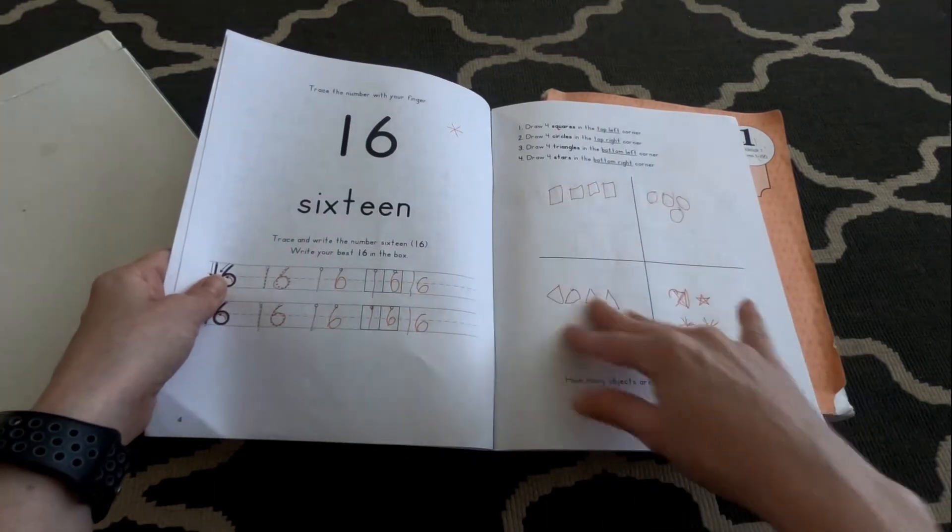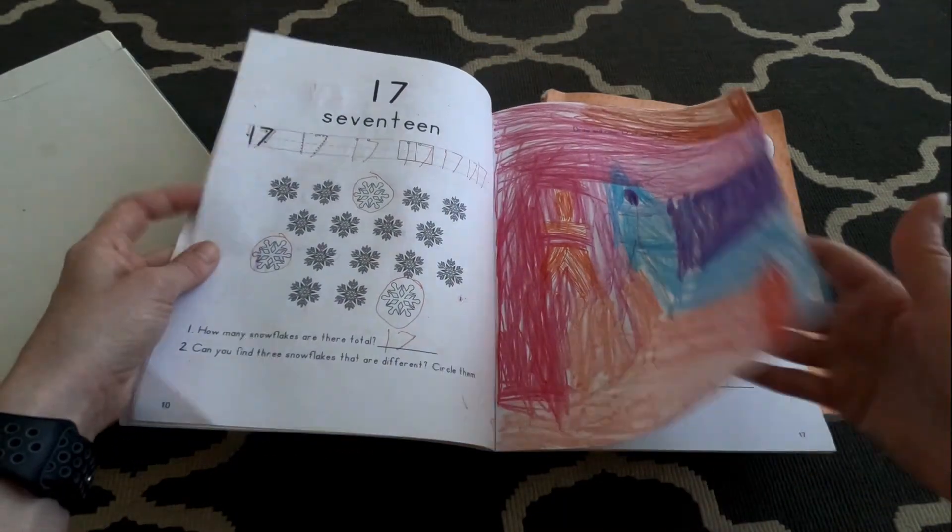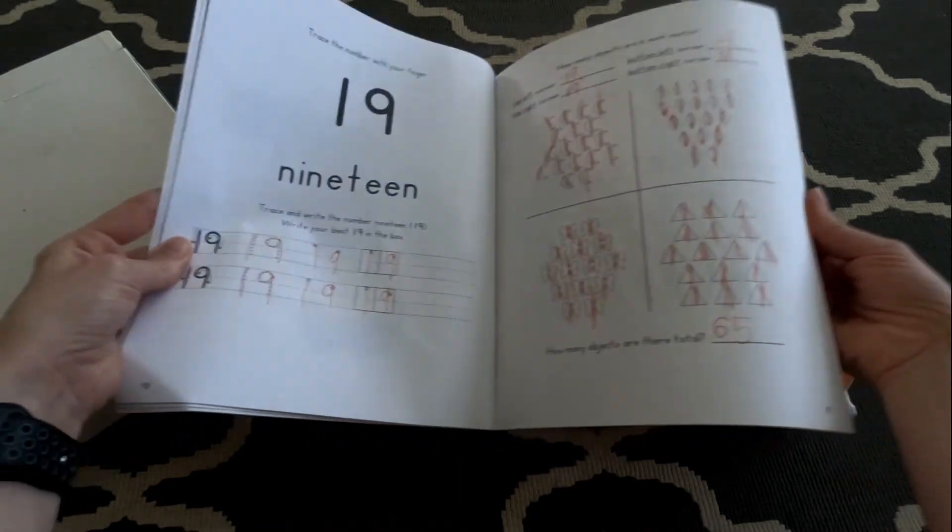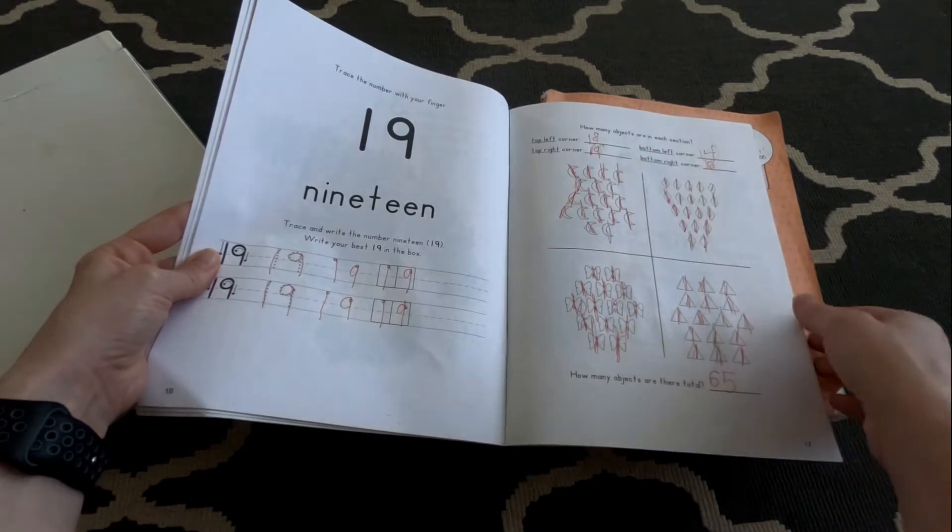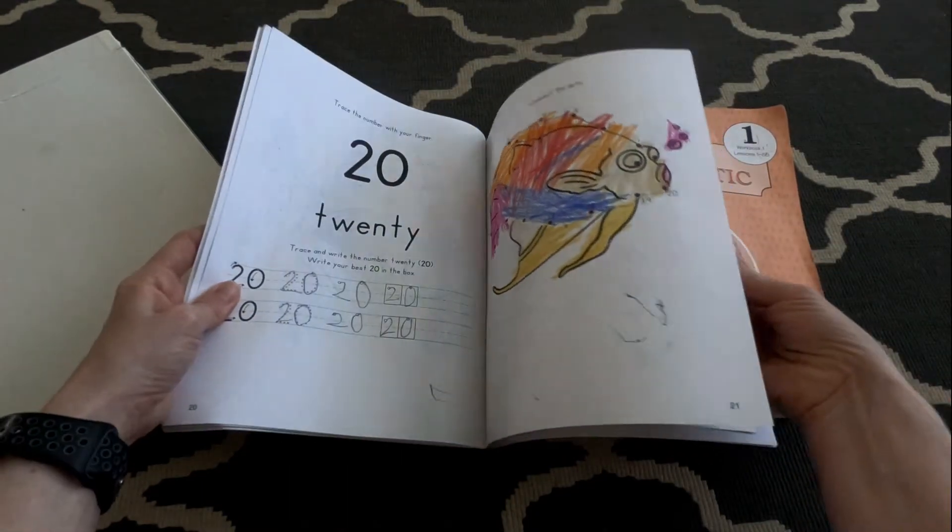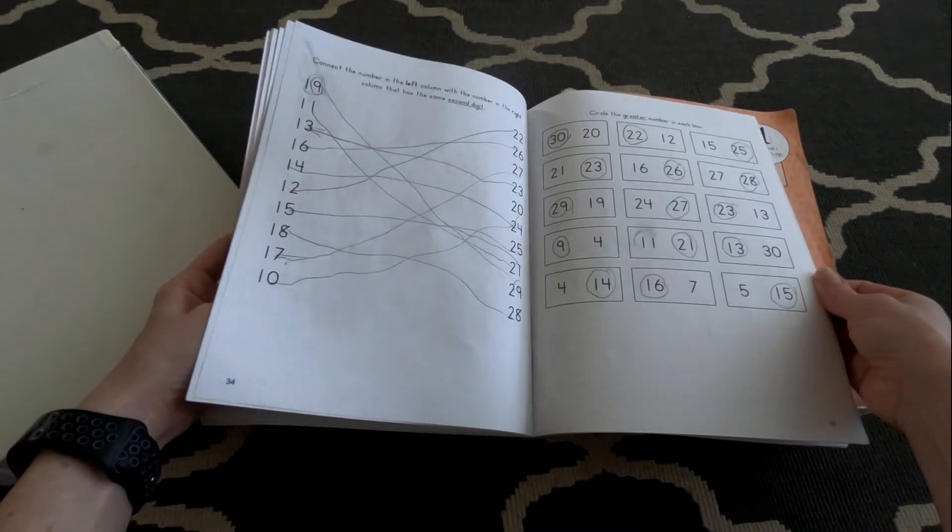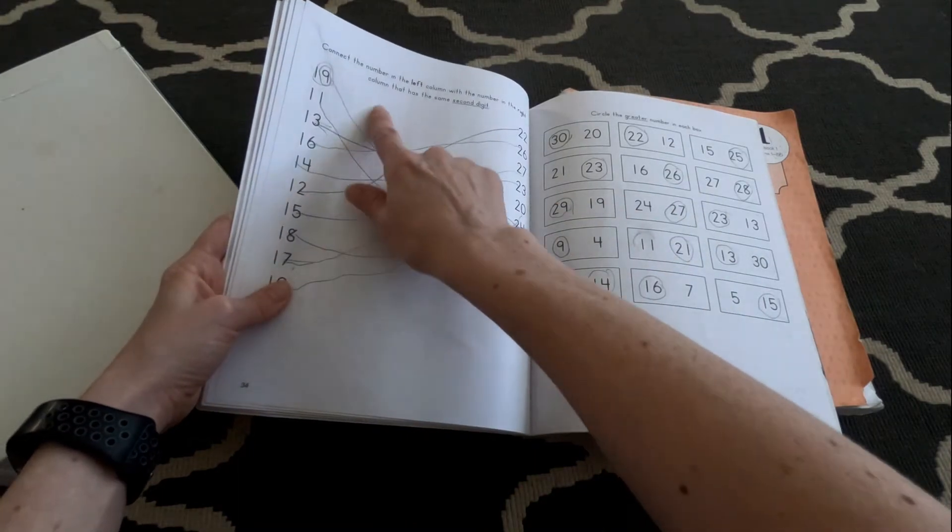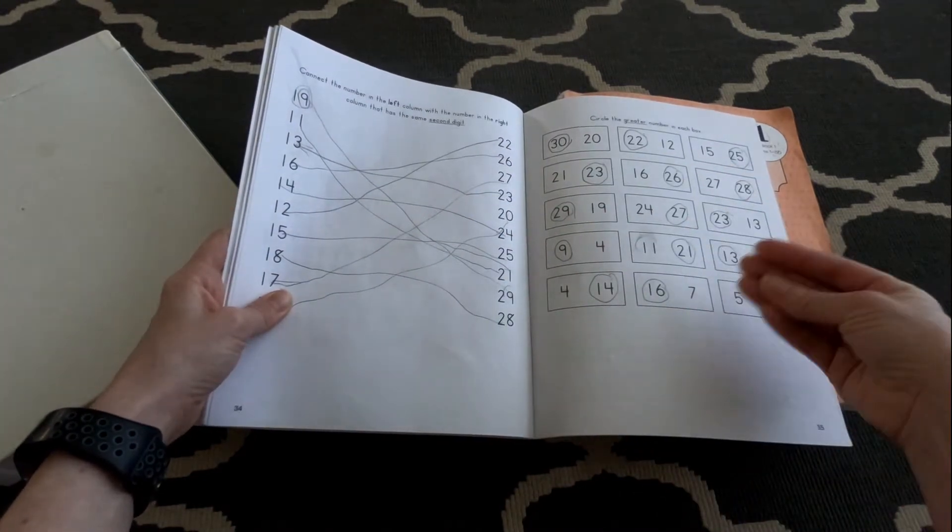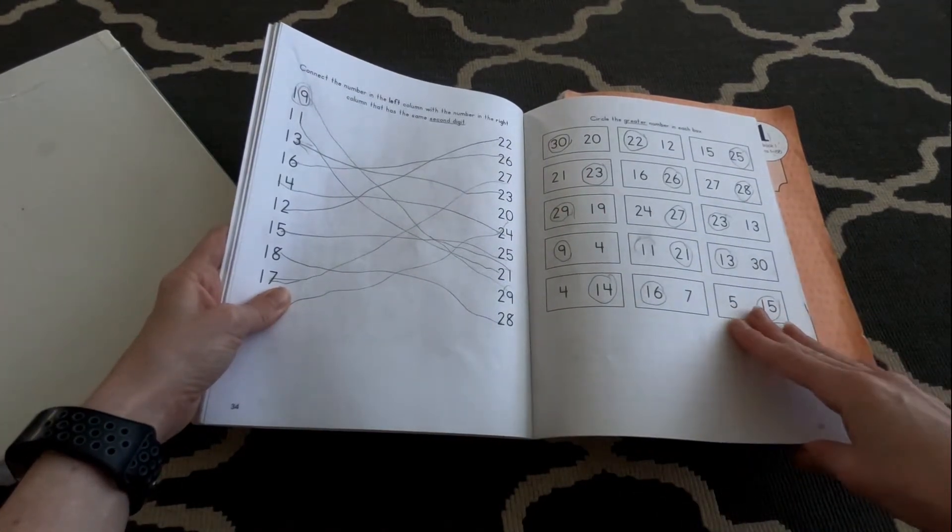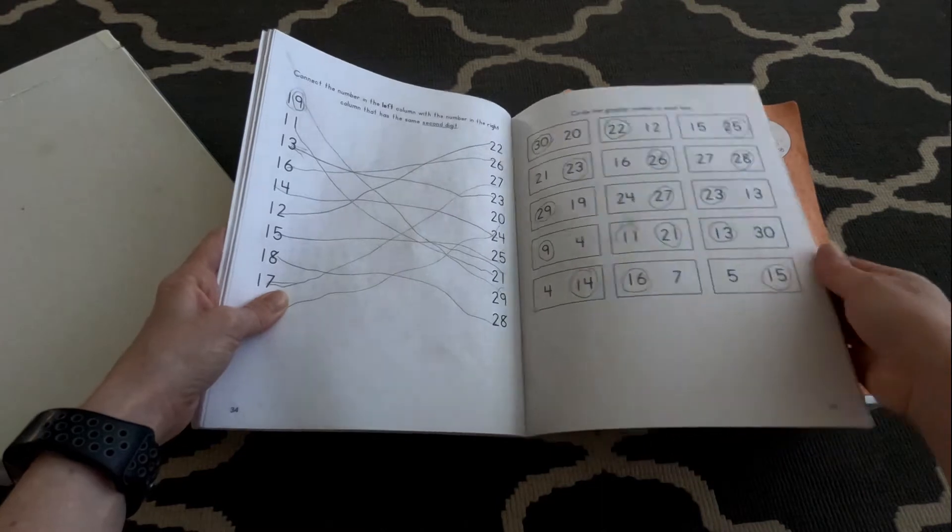And it's just practicing numbers, patterns, shapes, counting. I mean talking about top left corner, top right corner, bottom left, bottom right. So orientation, dot to dot, counting, greater numbers. It's talking about connect the number in the left column with the number on the right column that has the same second digit.